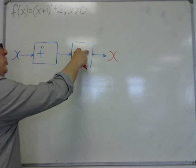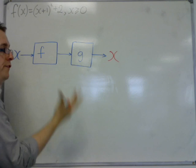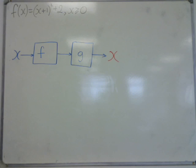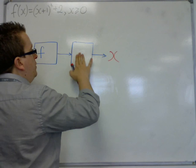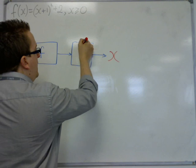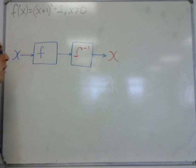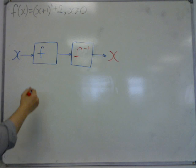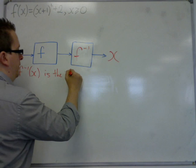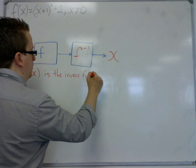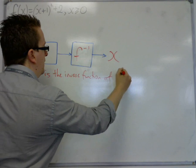So in order to do this g is then considered to be the inverse function of f. The function that inverts the process, that reverses the process of f. And in order to do that we use the notation f to the minus 1. So f to the minus 1 of x is the inverse function of f of x.